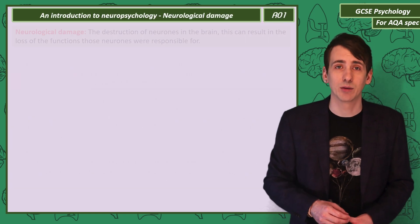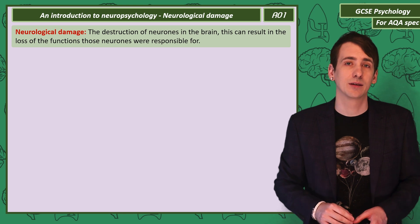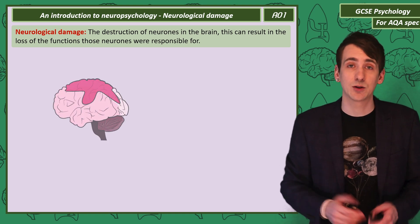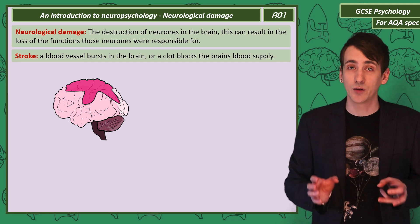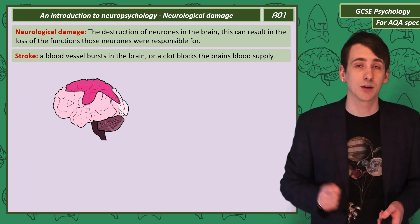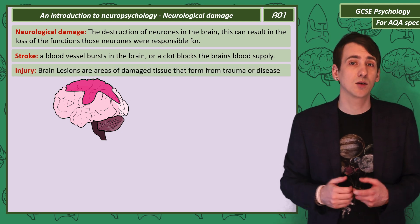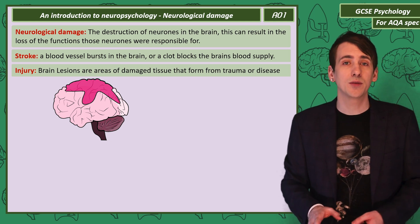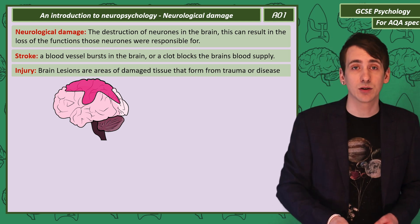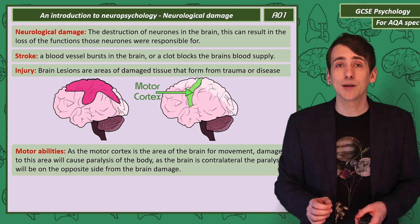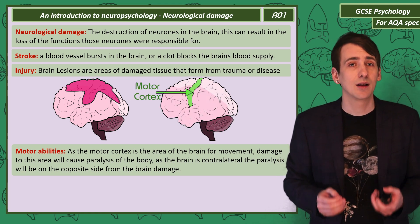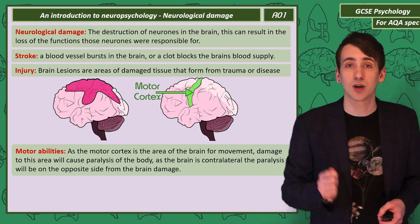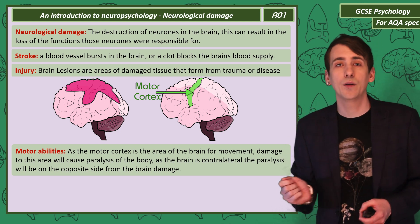Neurological damage is when the brain's neurons are in some way destroyed. If that happens, you can lose the function those neurons were responsible for. There are many ways neurons can be damaged: two examples are strokes — which occur when a blood vessel bursts releasing blood, or a clot blocks the blood supply — and physical damage, where a direct impact can cause scarring or a lesion. Physical damage can also be caused by disease. Motor abilities — how we move our body — can be affected: if the motor cortex is damaged it can cause paralysis of the part of the body that section controls. Keep in mind the brain is contralateral, so damage to the motor cortex causes paralysis on the opposite side of the body.